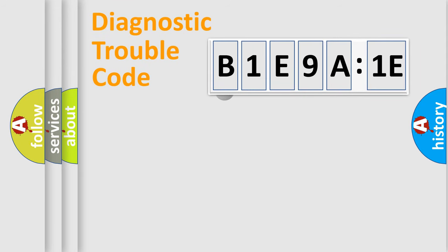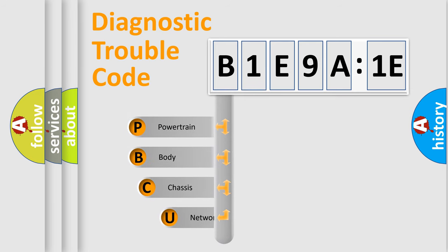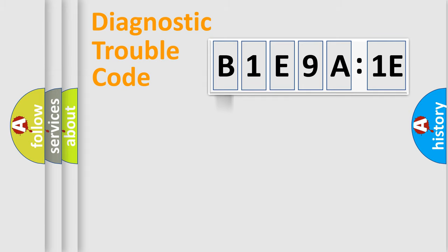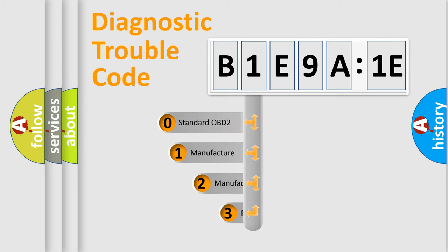First, let's look at the history of diagnostic fault code composition according to the OBD2 protocol, which is unified for all automakers since 2000. We divide the electric system of automobile into four basic units: Powertrain, Body, Chassis, and Network. This distribution is defined in the first character code.